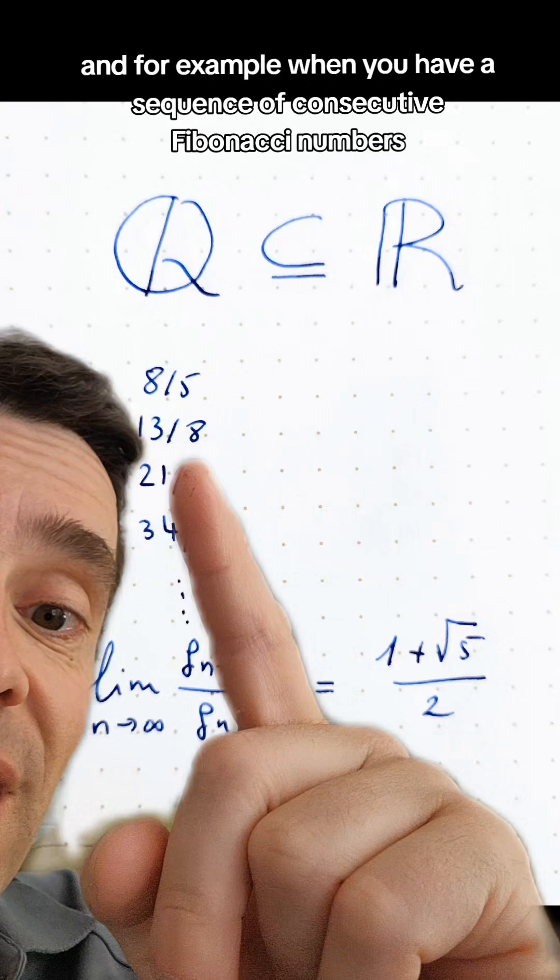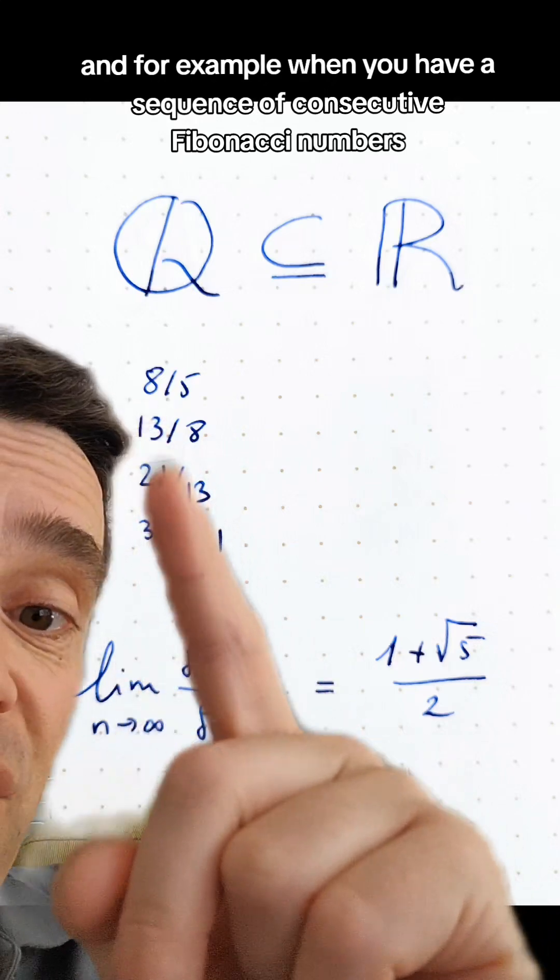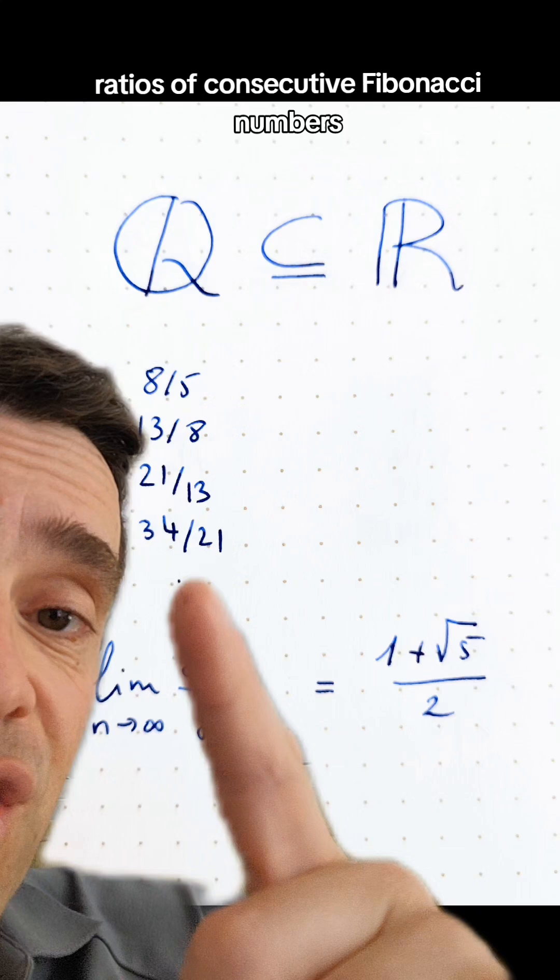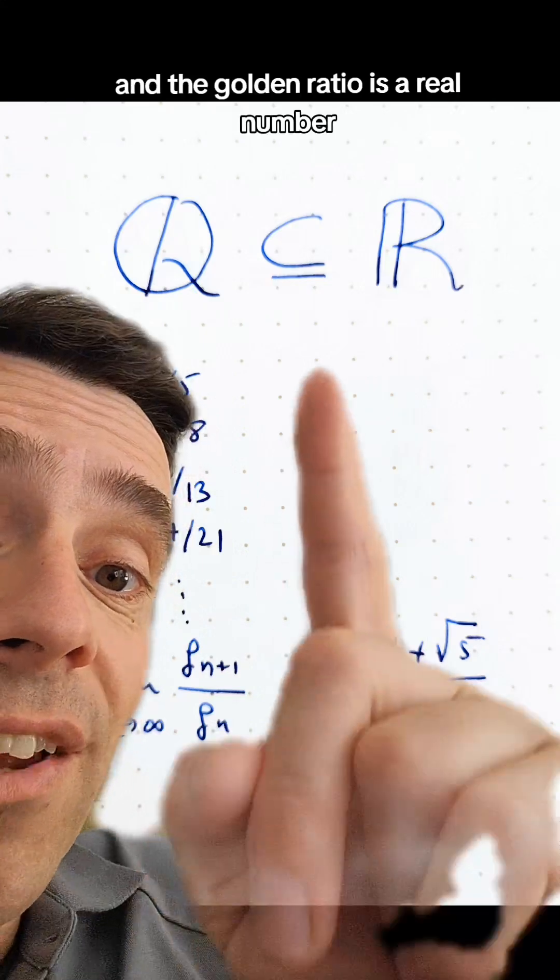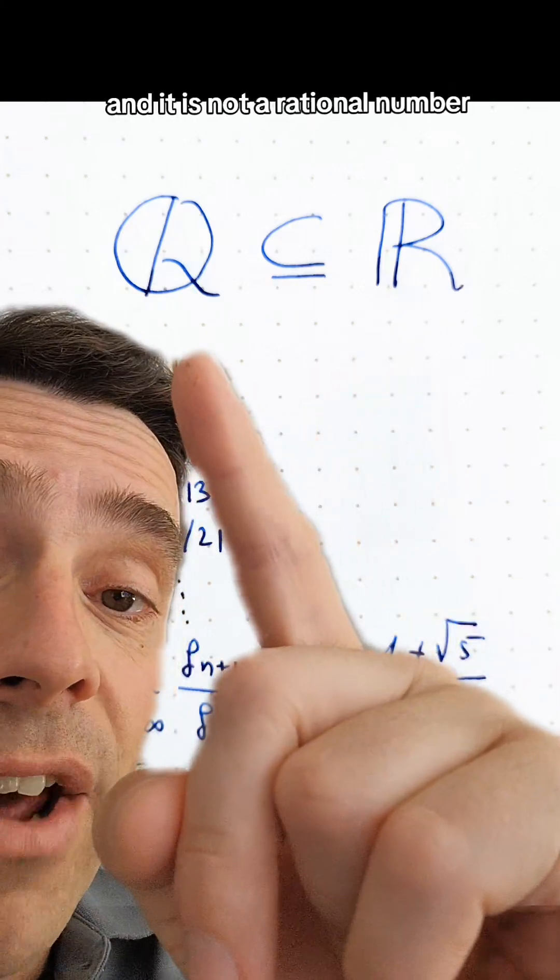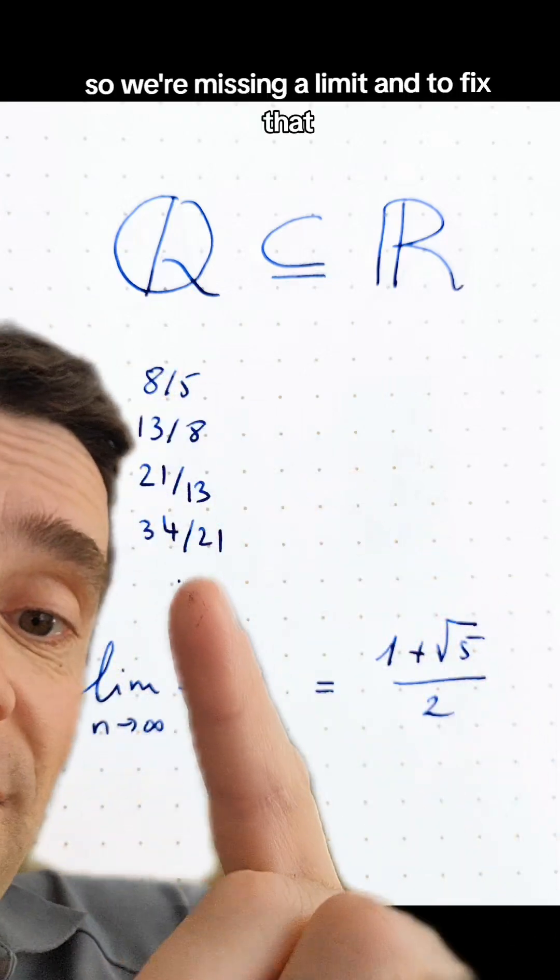For example, when you have a sequence of consecutive Fibonacci numbers, ratios of consecutive Fibonacci numbers, it turns out that the limit is the golden ratio. And the golden ratio is a real number, and it is not a rational number, so we are missing a limit.